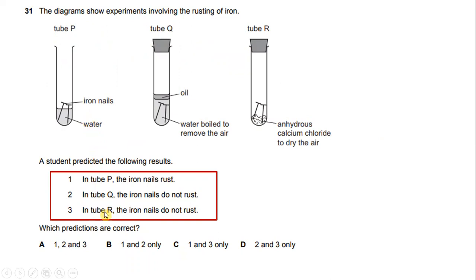Because water is boiled to remove the air, and on top of that we have oil. The tube is covered by rubber. And in tube 3, the iron nails also do not rust because the tube is covered with rubber and there is anhydrous calcium chloride to dry the air. So which predictions are correct? The answer will be 1, 2, and 3.